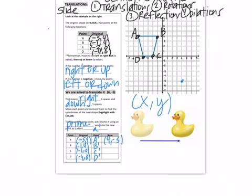We'll do the same for B. So right 6. 1, 2, 3, 4, 5, 6. 1, 2, 3, 4, 5. So 5, negative 1.